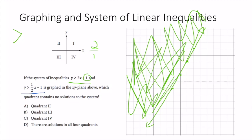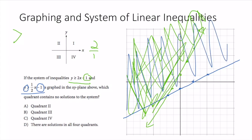For the blue line, I start at -1. My rise over run is 1 over 2 — rise 1, run 2. Connecting those points. Again, I'm greater than, so the solution is everything above the blue line.